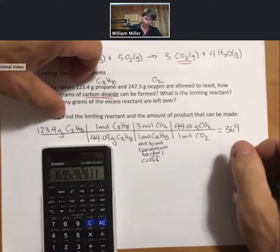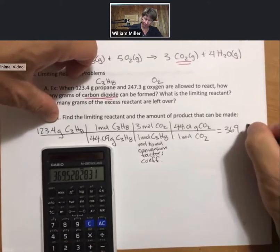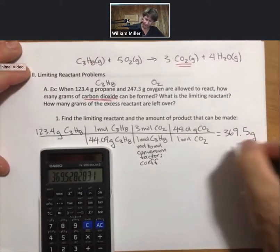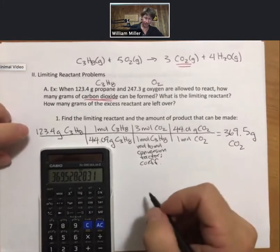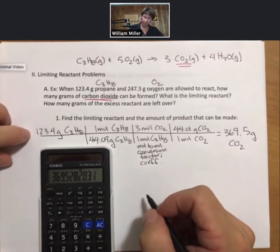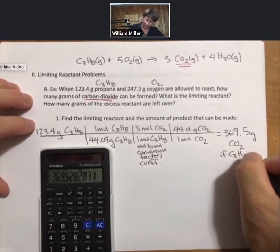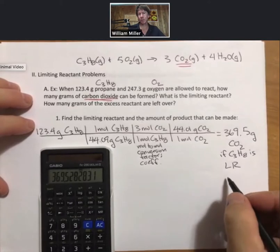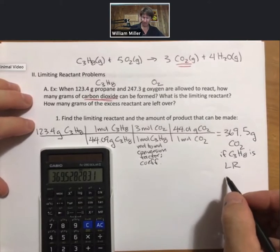I get 369.5 or 369 to 3 sig figs. Oh, I have four sig figs here, so let's go to 369.5. Three would be fine. Grams CO2 if propane is the limiting reactant. And here I use the abbreviation LR for limiting reactant.